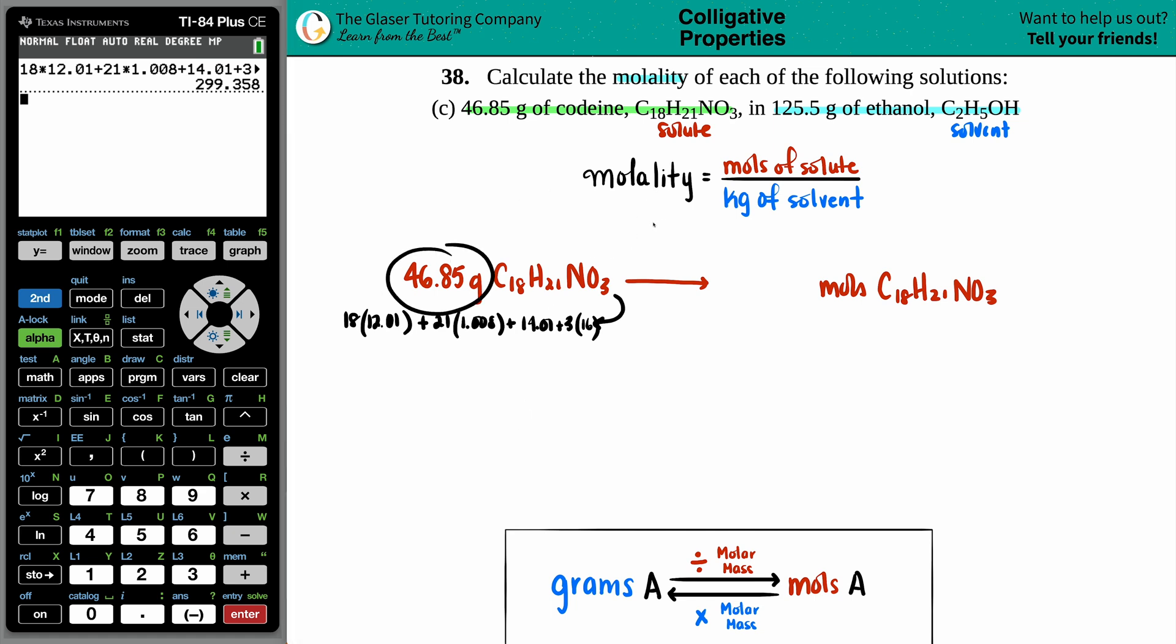So we're going to take the 46.85 grams and divide it by the 299.358. 46.85 divided by this number, and we get, we'll give it a couple of decimals, 0.1565. That looks good to me. Moles of the codeine. So we have the numerator.